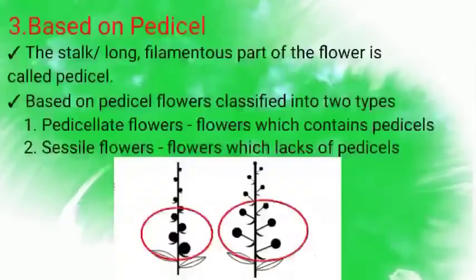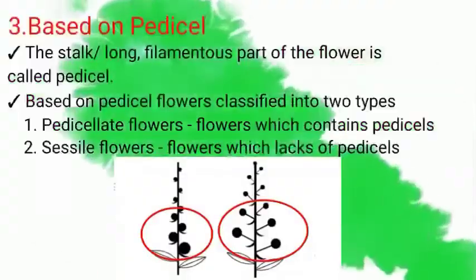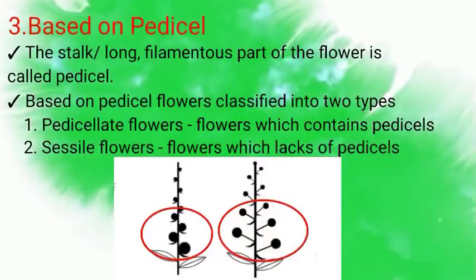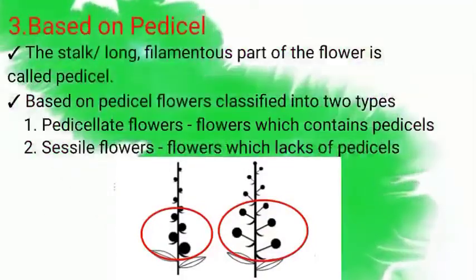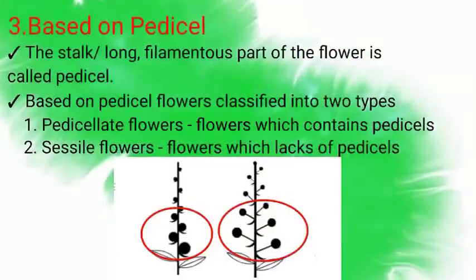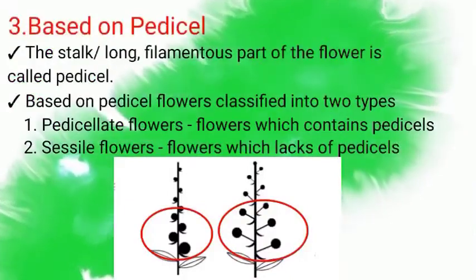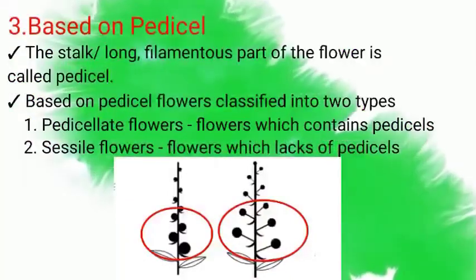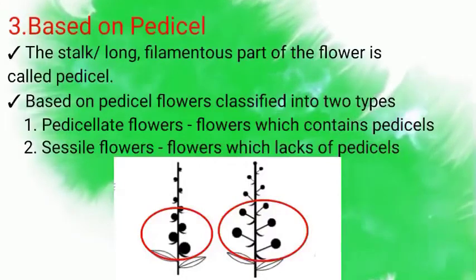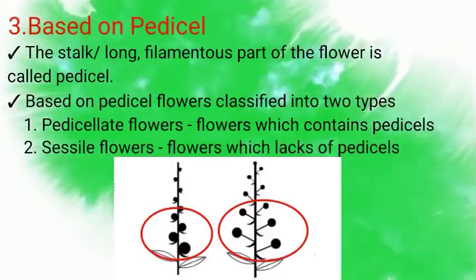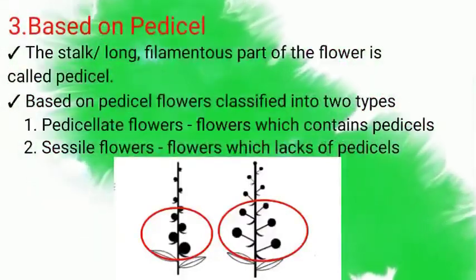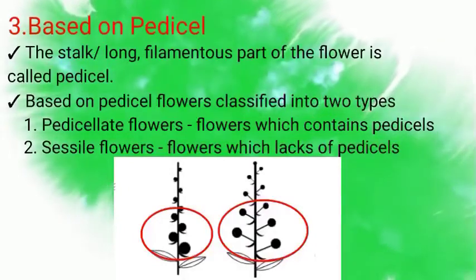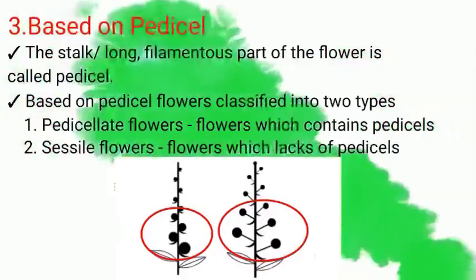The third aspect of classification of flowers is Pedicel. The stalk or long filamentous part of the flower is called the Pedicel. Based on Pedicel, flowers are classified into two types: Number one, Pedicellate Flowers, which contain Pedicels; and Number two, Sessile Flowers, which lack Pedicels.